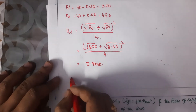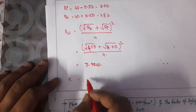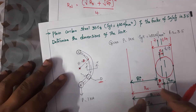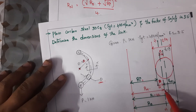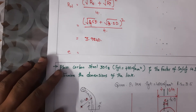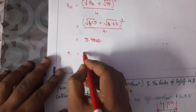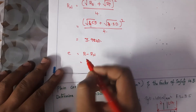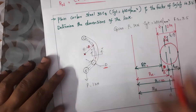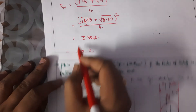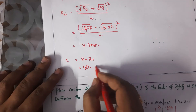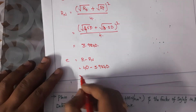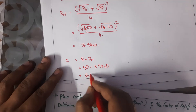Next, we calculate the eccentricity value e. e = r − rn, where r is the distance from the radius of curvature to the centroidal axis. r = 4d (given), rn = 3.984d (calculated). So e = 4d − 3.984d = 0.0157d.